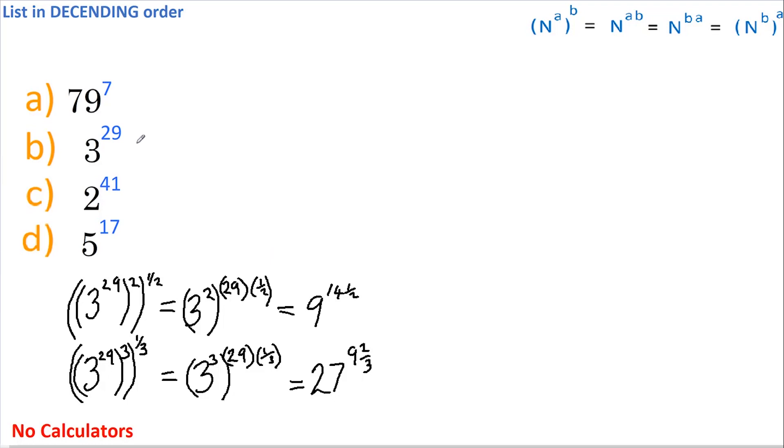So all of these are equivalent: 3 to the 29 equals 9 to the 14 and a half equals 27 to the 9 and 2 thirds. It also equals, and this time I'm not going to write it down, but I'm going to raise this to the power of 4 and then raise it to the power of a quarter.